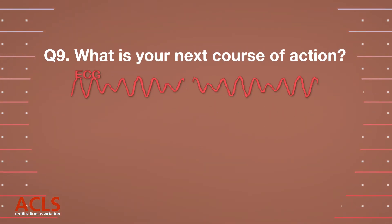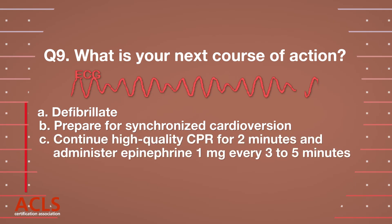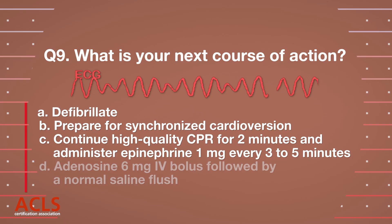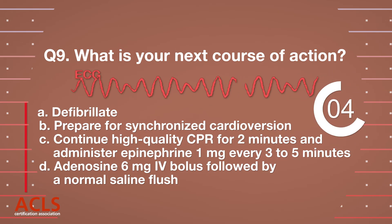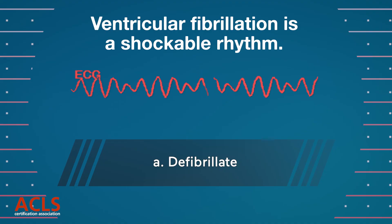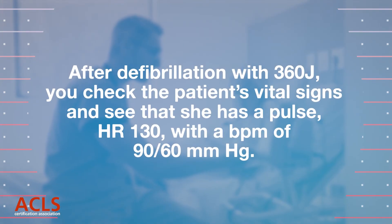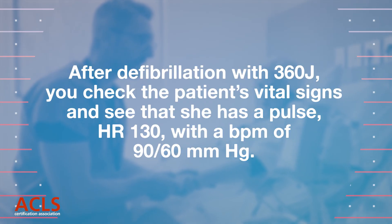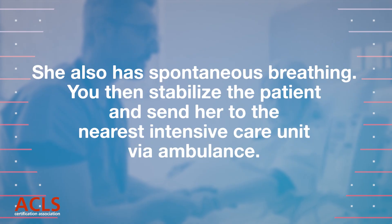Question 9: What is your next course of action? A. Defibrillate. B. Synchronized cardioversion. C. Continue CPR for 2 minutes and administer epinephrine 1 mg every 3 to 5 minutes. D. Adenosine 6 mg IV bolus followed by a normal saline flush. Correct answer: A. Defibrillate. Subsequent shocks should be delivered with the same energy or higher. After defibrillation with 360 joules, the patient has a pulse and spontaneous breathing. She is stabilized and transferred to the intensive care unit.